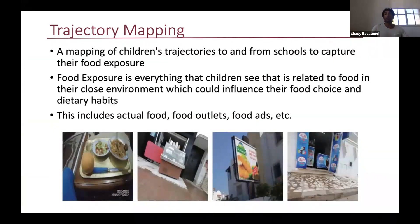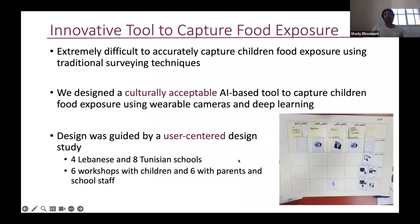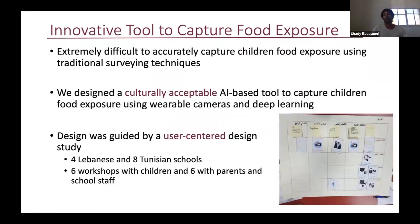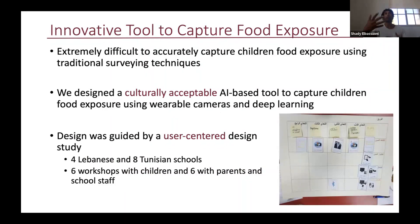This includes actual food that the children are eating or are seeing other people eating, but it also includes food outlets and advertisements. This is extremely difficult to do, particularly when working with children, because of recall bias, but also because we're targeting not just food that children have eaten but also advertisements and outlets. It's really difficult to ask children what advertisements they saw on the way to school or on the way back.